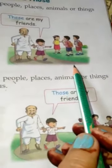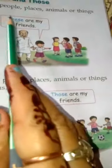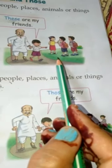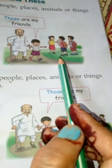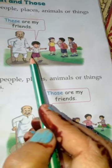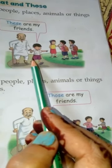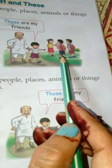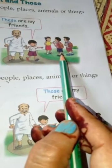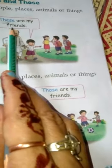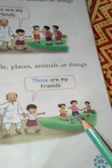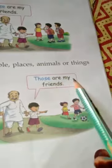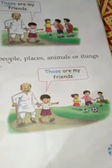जब friends इसके पास थे, तो 'these' we will use for many. जब many animals या persons हमारे close हैं, पास हैं, तो we will use 'these.' और जब more than one हैं और दूर हैं, तो those are my friends — you will use 'those' like this.